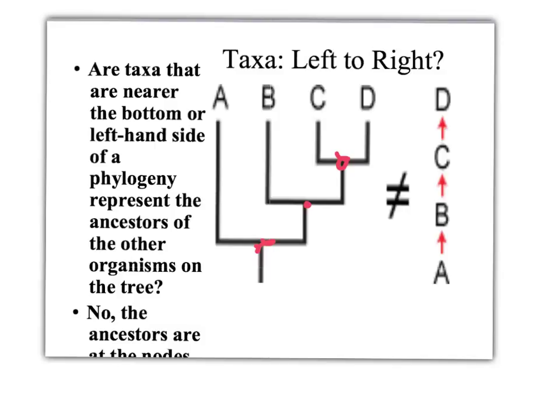A lot of people also make the mistake of thinking that D is the only descendant to C, B, and A. Now, the reason why that is not correct is because C, B, and A taxa are not ancestors. Only ancestors are at the nodes.